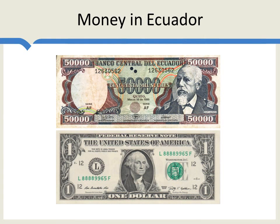Here's a picture of some Ecuadorian money. Prior to the year 2000, the Ecuadorians used the sucre. After the year 2000, they used the dollar. This was a controversial switch in Ecuador — why should Ecuadorians have a picture of George Washington on their currency instead of Elroy Alfaro, a famous Ecuadorian president? Can you guess why they switched? It has something to do with the fact that this is a 50,000 sucre note.